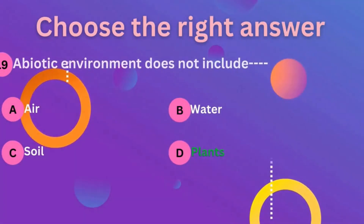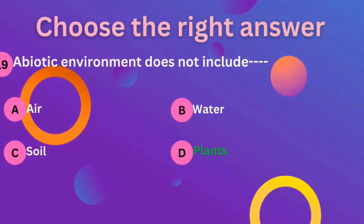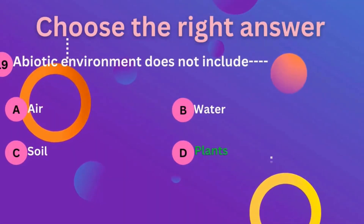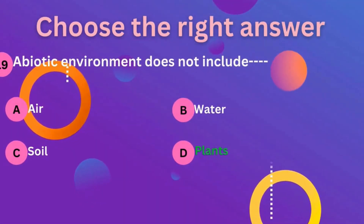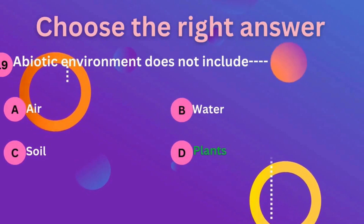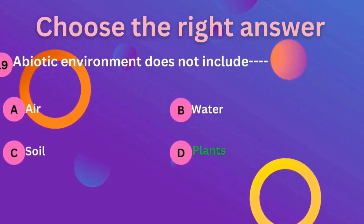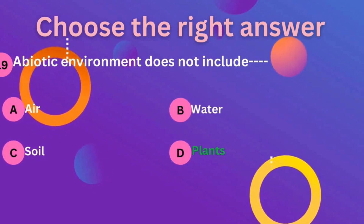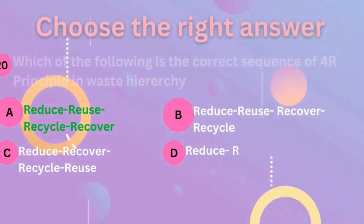Question 19: the abiotic environment does not include plants, because air, water and soil are abiotic, and plants are biotic.